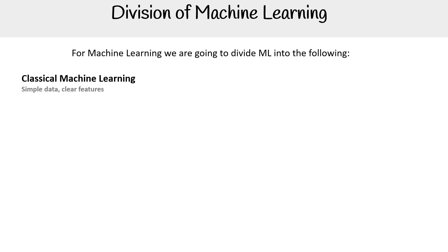We have classical machine learning. The advantage of classical machine learning is the data is simple, you have clear features, and generally classical machine learning is extremely cost efficient compared to other types. This is where you have supervised and unsupervised learning — think of those two things when you think of classical machine learning.